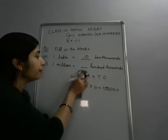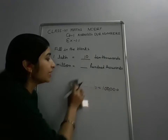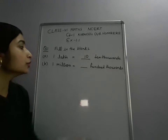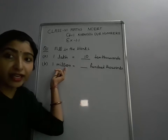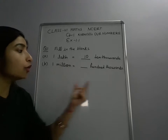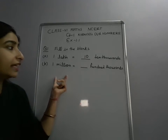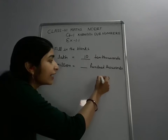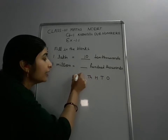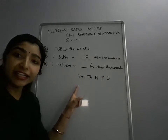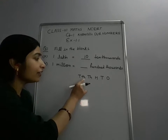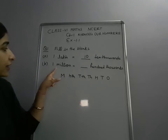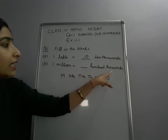Now the second part: 1 million is equal to dash 100,000. So 1 million — this is the international place value system. First you will draw the Indian place value chart, and here it is 100,000. In the international place value chart, after 10,000 there is 100,000 and then million. So this is 1 million and this is 100,000.